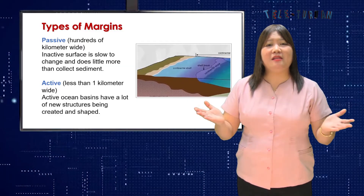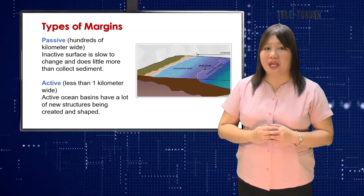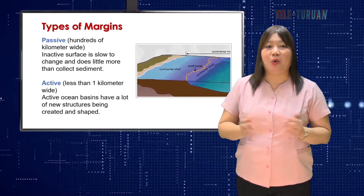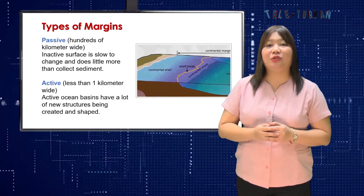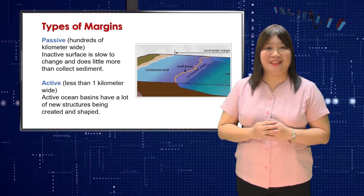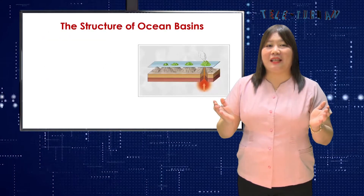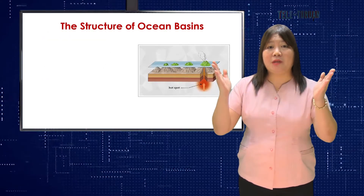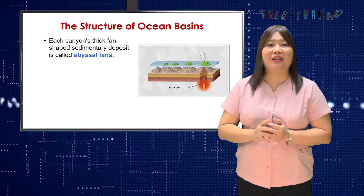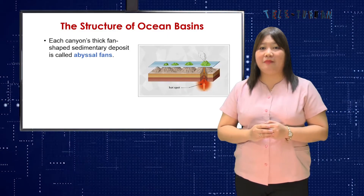Ocean basins can be either active, with a lot of new structures being created and shaped, or they can be inactive, where their surface is slow to change and does little more than collect sediment. All of those slopes are capped by submarine or V-shaped canyons. Each canyon's thick, fan-shaped sedimentary deposit is called an abyssal fan.